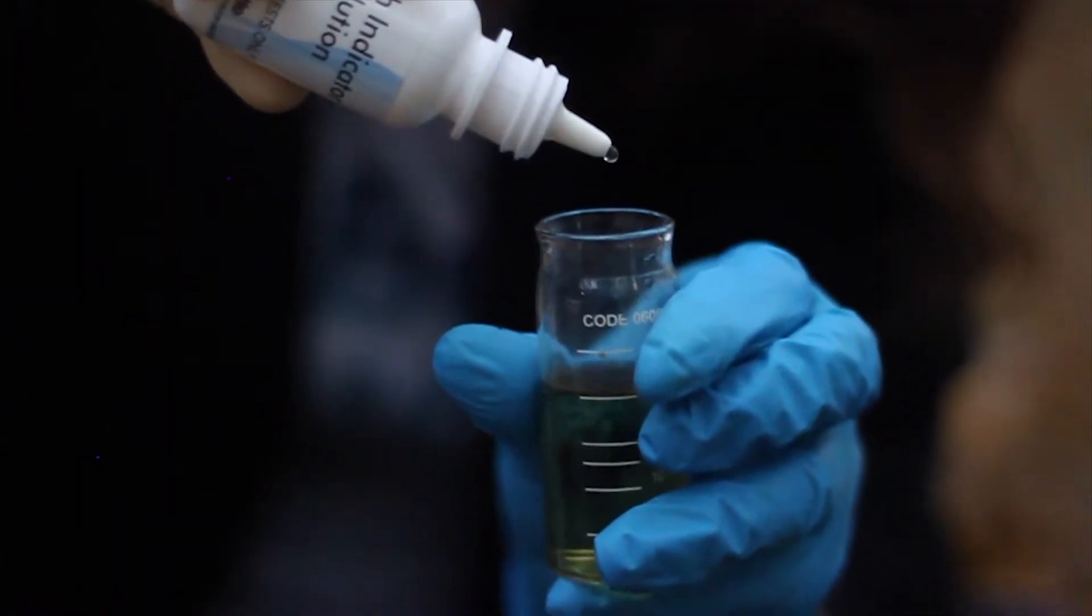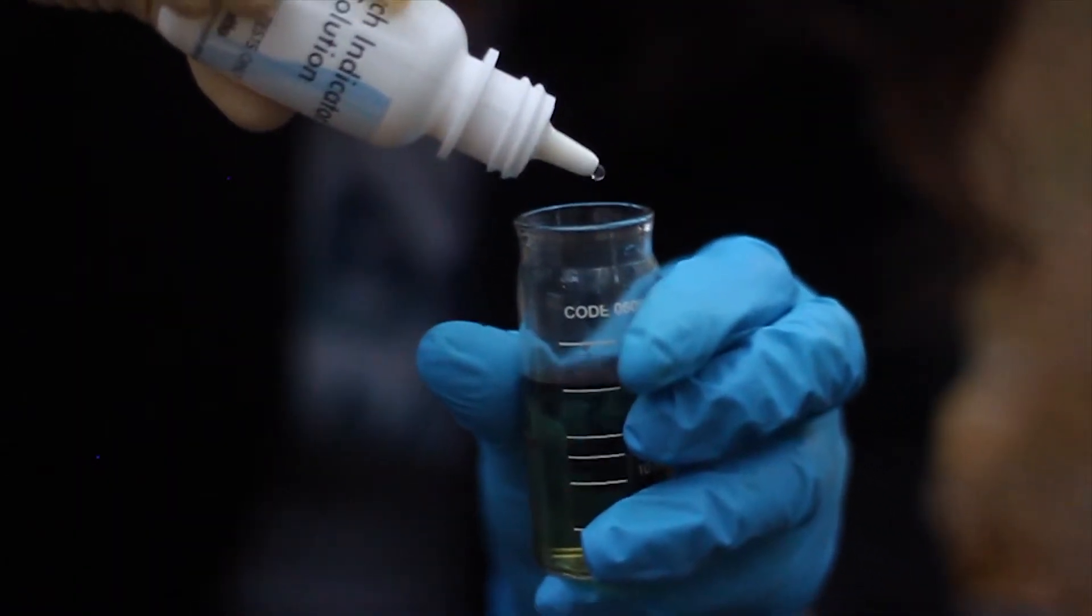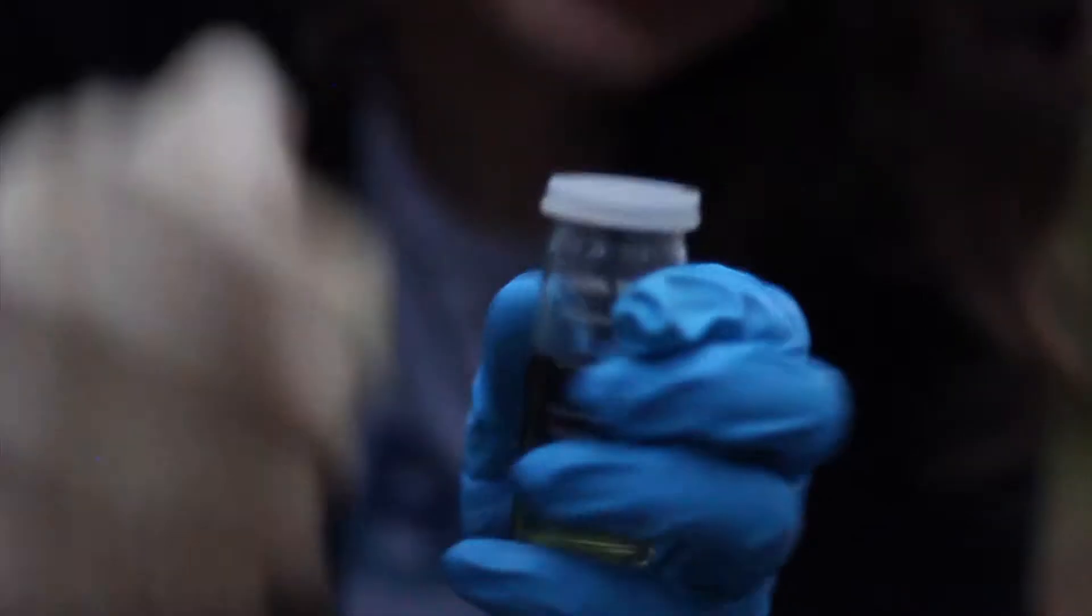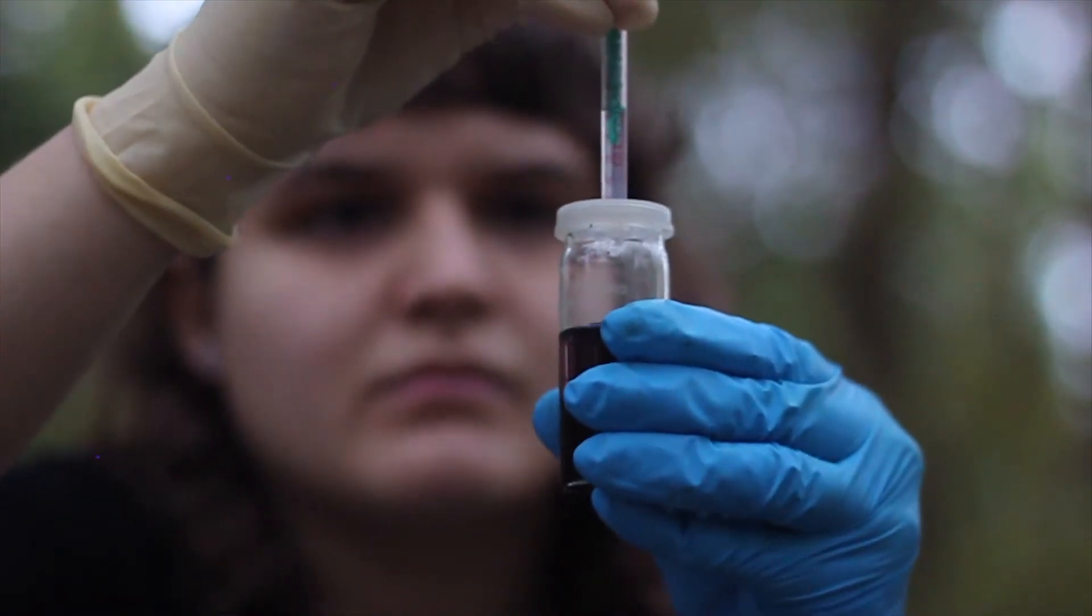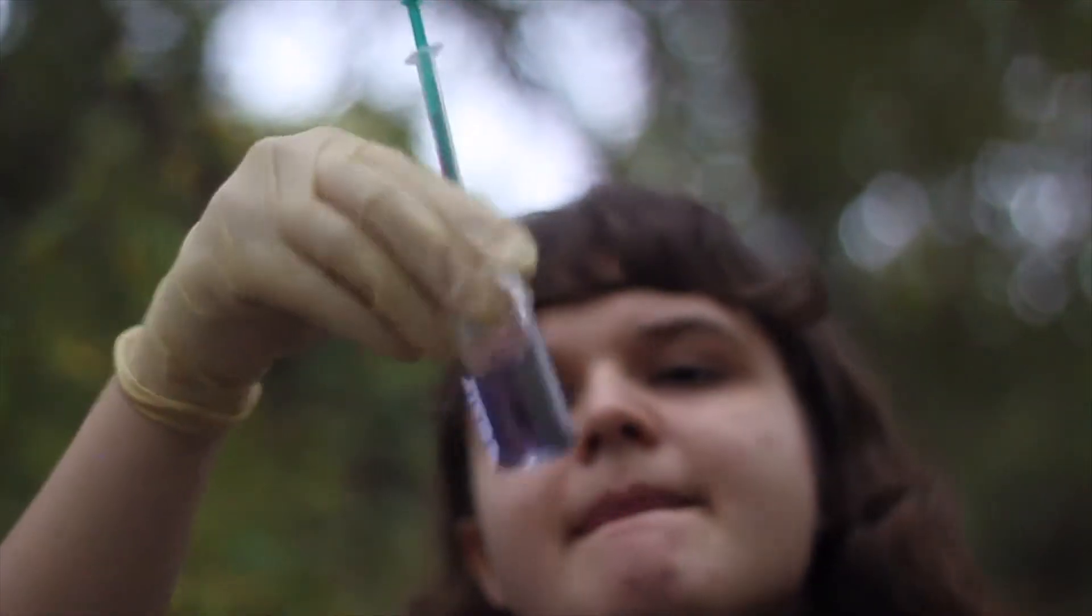Remove the cap from your vial and add 8 drops of starch indicator. Replace your cap and titrator and begin the titration of your second value. Once the color has cleared, record the value for your second titration.